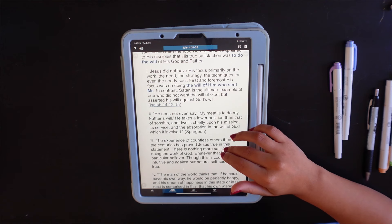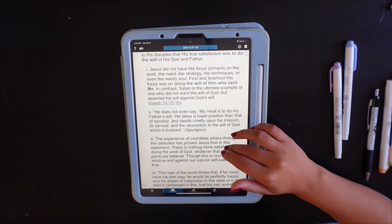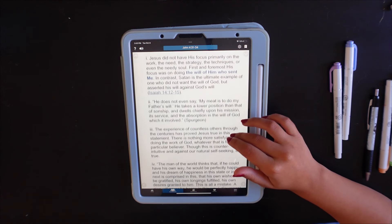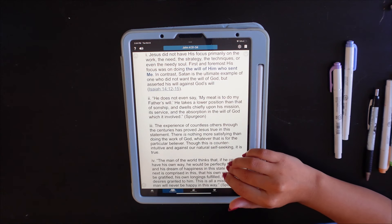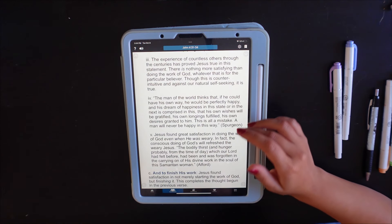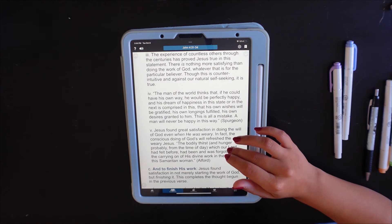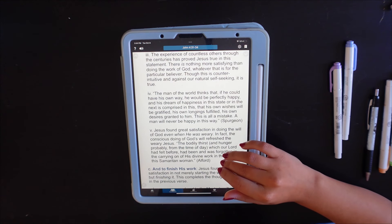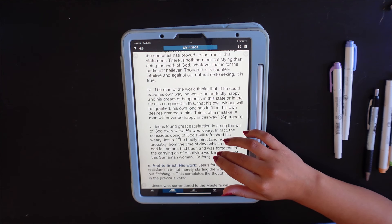Jesus had a greater source of strength and satisfaction than the food he ate. Jesus explained to his disciples that his true satisfaction was to do the will of his god and the father. He did not have his focus primarily on the work, the need, the strategy, the techniques, or even the needy soul. First and foremost his focus was on doing the will of him who sent me. There is nothing more satisfying than doing the work of God, whatever is for the particular believer. Though this is counterintuitive and against our natural self-seeking, it is true.